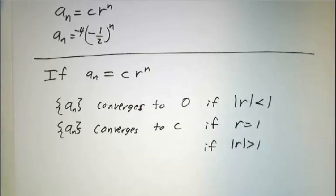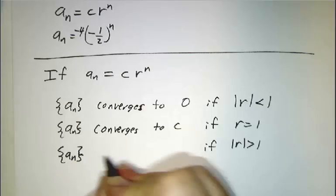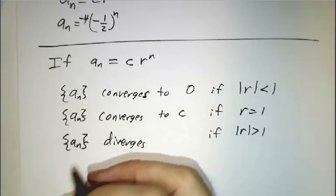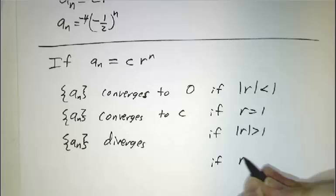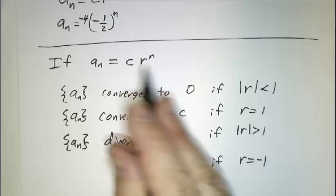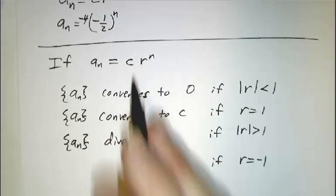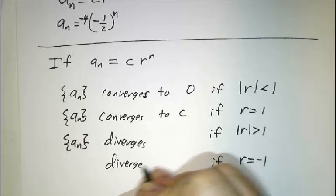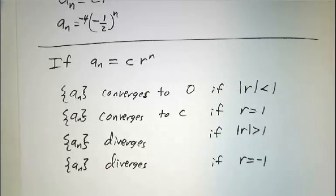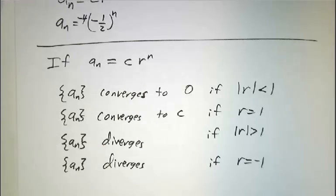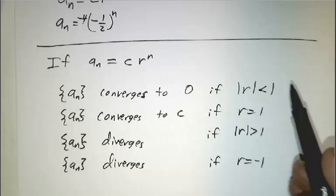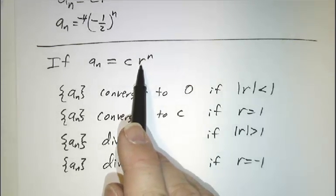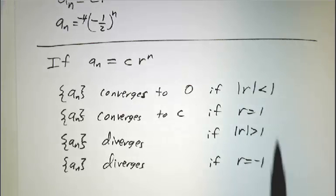If r is bigger than 1, the terms get bigger and bigger, so it diverges. If r equals −1, you get c, then −c, then c, then −c — it never settles down and keeps bouncing between positive and negative, so it diverges. You should definitely remember this behavior: if |r| < 1 it converges; if r = 1 it converges to c; if r = −1 or |r| > 1 it diverges.